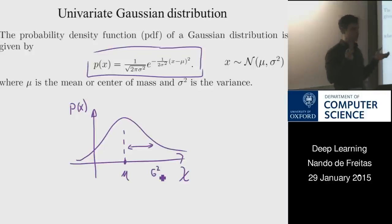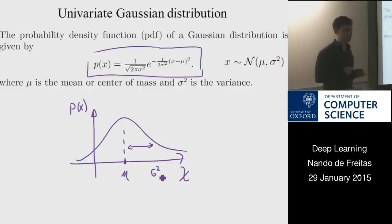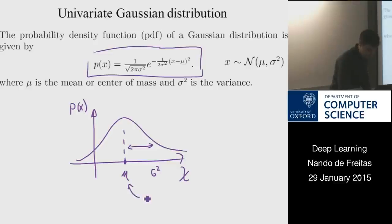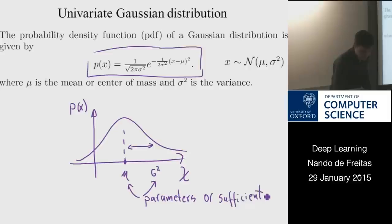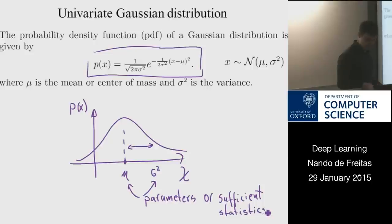If you know the mean and the variance, you can draw the bell curve. We call these sufficient statistics because they are sufficient to describe the whole curve. If you know these two parameter values — the mean and the variance — you can describe the process completely.